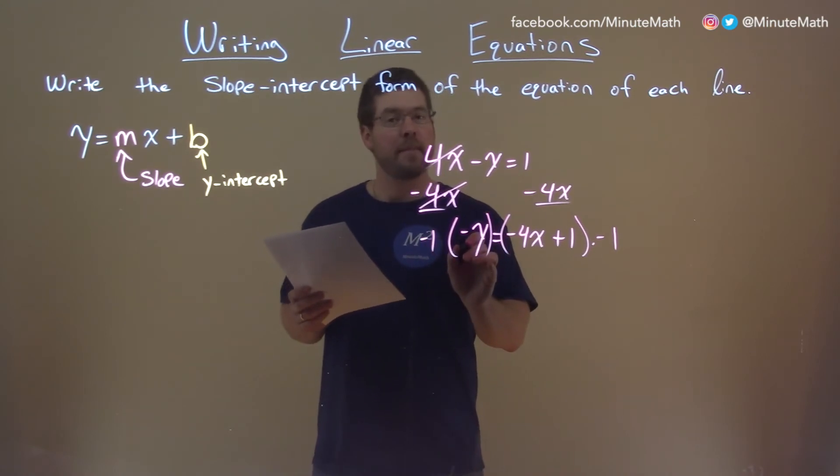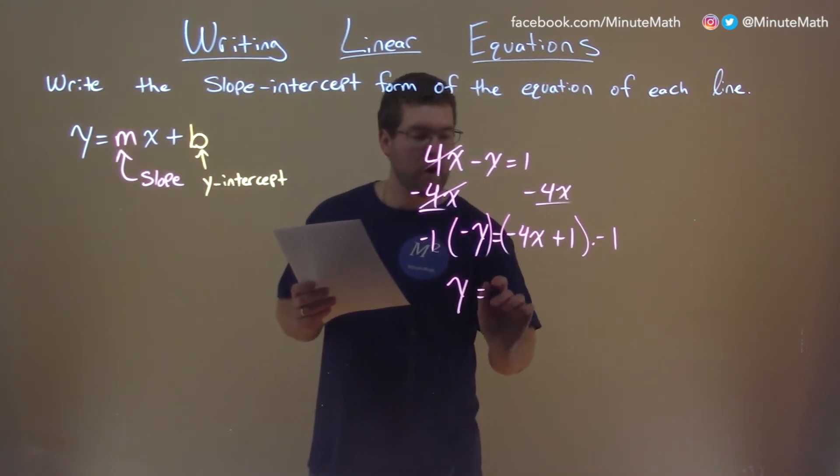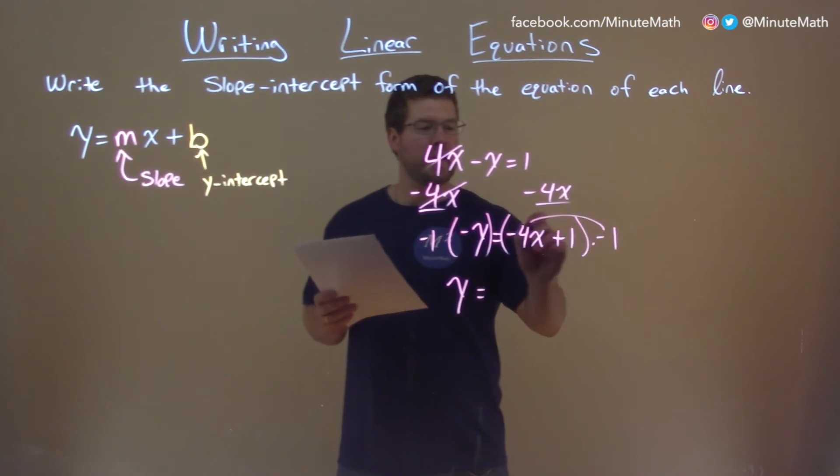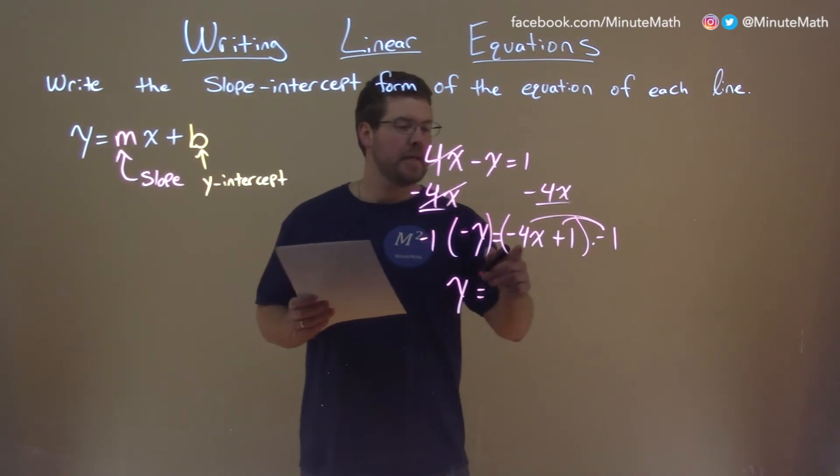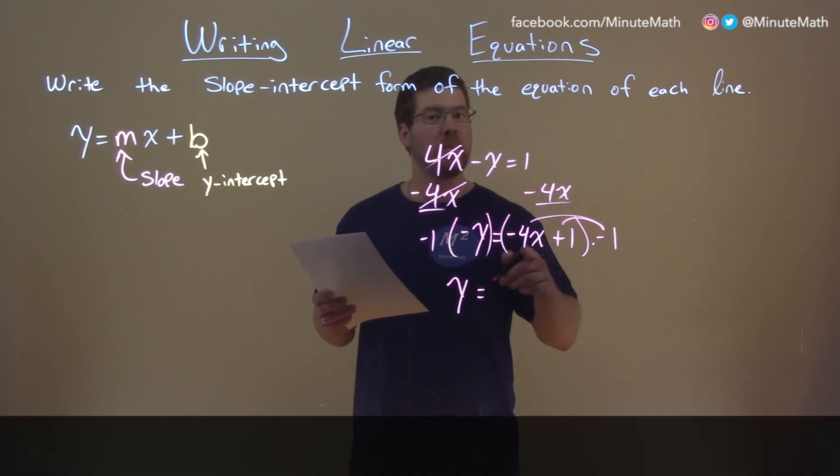Negative times a negative is a positive, we have positive y here. Now, distribute that negative 1 to both parts inside the parentheses. Negative 4 times negative 1 is a positive 4.